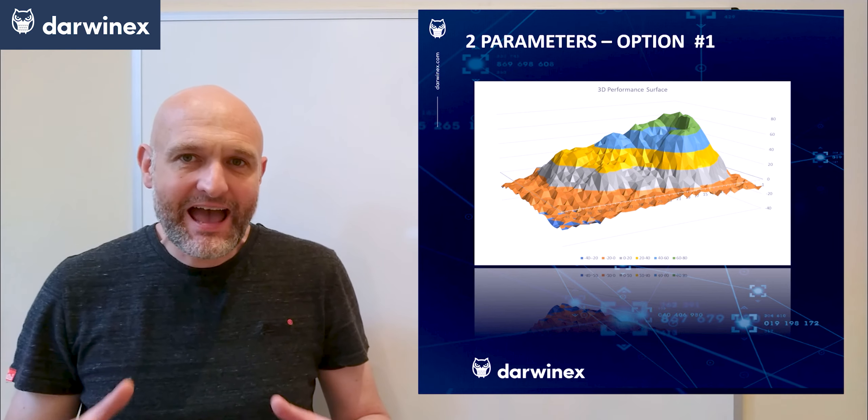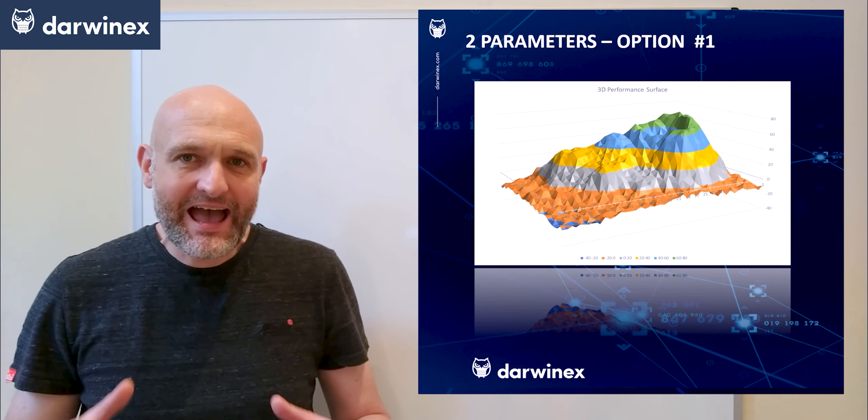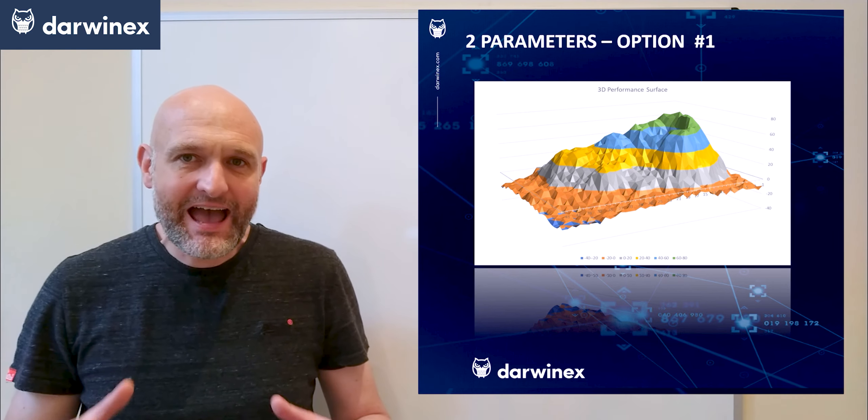Let's bring our attention back to how we visualize these profiles when we optimize two parameters. We have two ways of doing this. The first is with the use of a surface, where the values for each parameter being tested are along the two horizontal axes and the performance is displayed on the vertical axis. All of the rules we've already looked at still apply: firstly, you need an overall net positive performance; secondly, you don't want to see any erratic results, which are an indicator of overfitting or low sample sizes, or probably both.